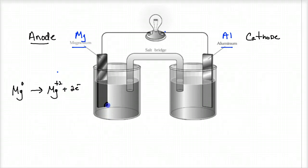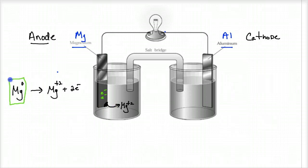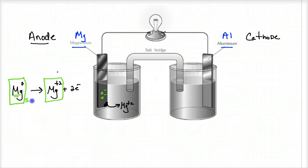Mg⁰ is a solid, and Mg²⁺ is aqueous — so a solid goes to an aqueous ion. The anode is corroding and getting smaller. Two electrons are then pushed through the conductor toward the cathode. Note that Mg⁰ at zero oxidation state is a solid; the exception is mercury, but you won't see that in this type of electrochemical cell.